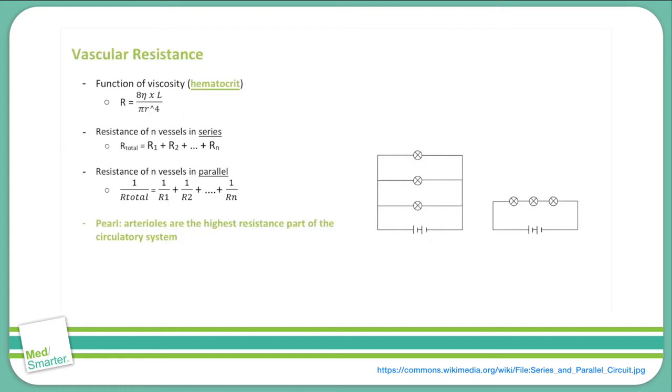Let's write it out a little bigger so we can take a closer look. We have resistance equals 8 times the symbol eta. The symbol eta is a coefficient for the viscosity of the fluid in our system, which in this case is blood, times the length of the vessel over pi r to the fourth power.